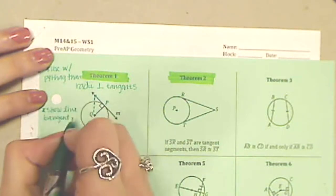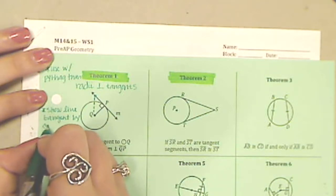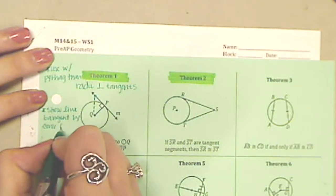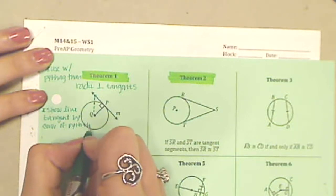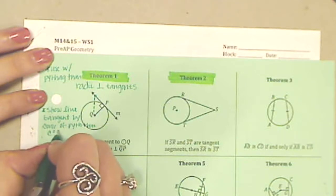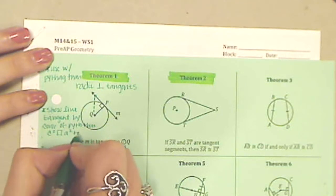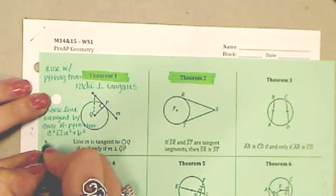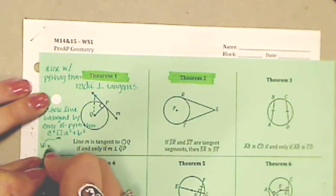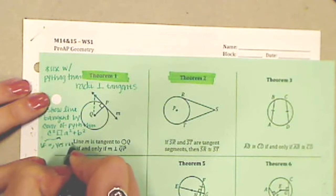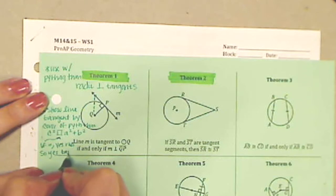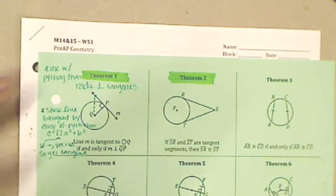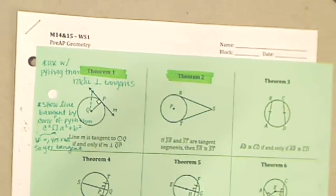You'll show the line is tangent by using the converse of the Pythagorean theorem. You check a squared plus b squared, and if that equals c squared, then yes, it's a right triangle, so yes the line is tangent. If it's not equal, then no, the line is not tangent.